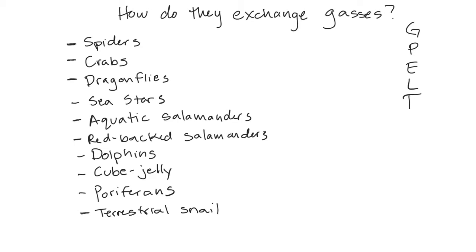Who did spiders? What do spiders have? Some spiders actually have lungs. Most of them do, actually. They have what's called a book lung — it's a convergent structure, not the same evolutionary origin as ours, but it is a lung, similar to what we have but structured a little differently.